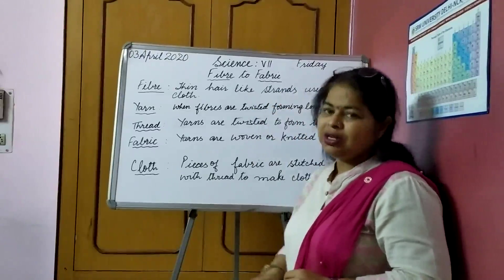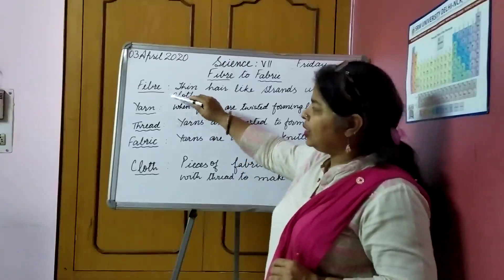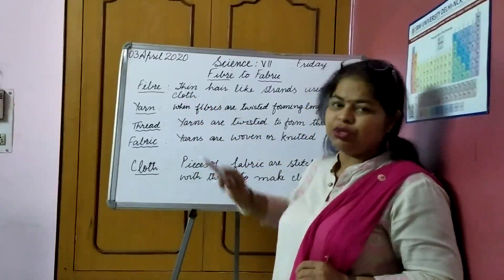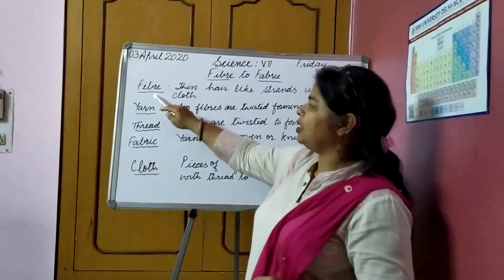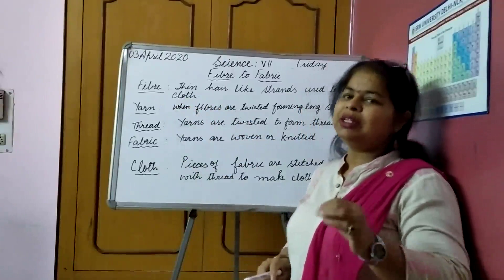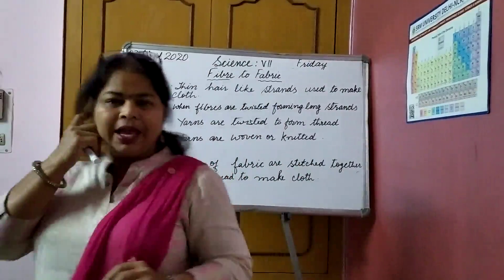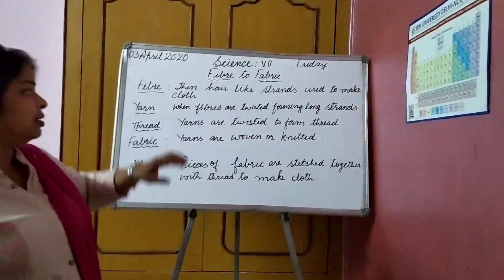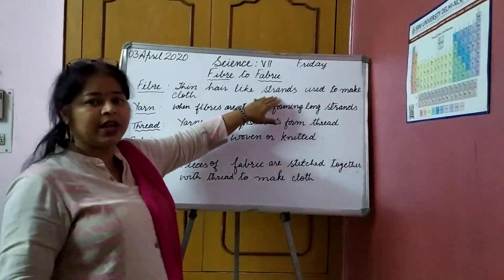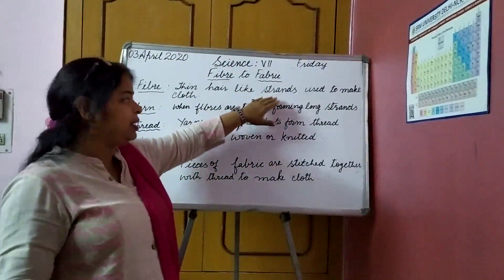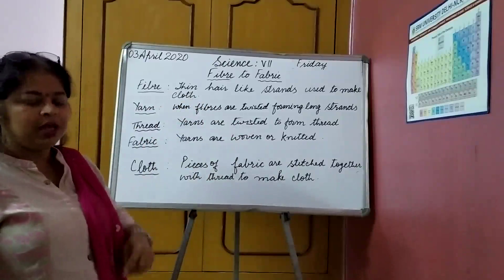First, let us know what are the basic terms we are going to study right now. The first basic term is fiber. What is a fiber? Fiber is a thin, hair-like strand. These are the thin hair-like strands or filaments that are used to make cloth.